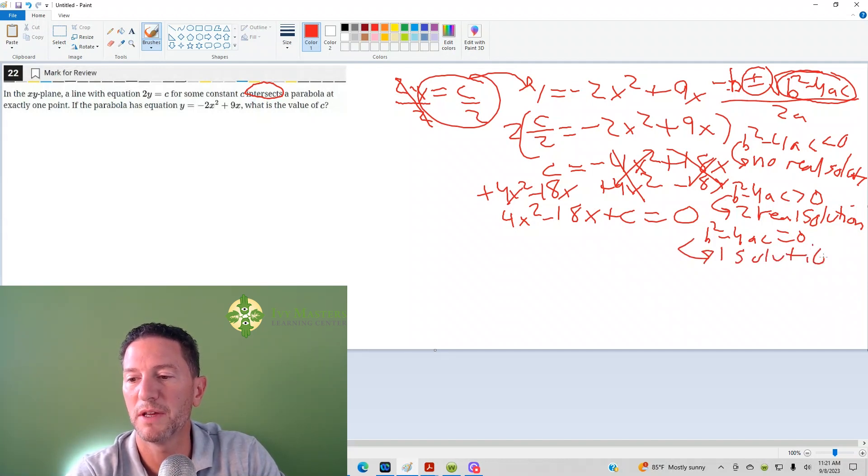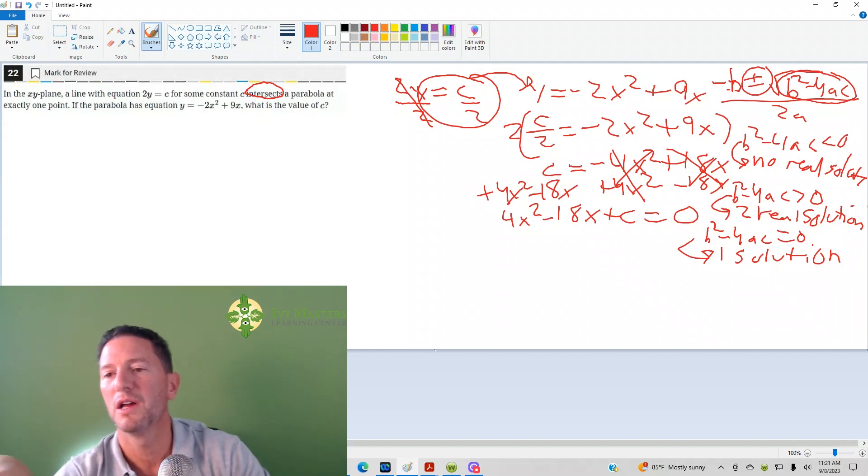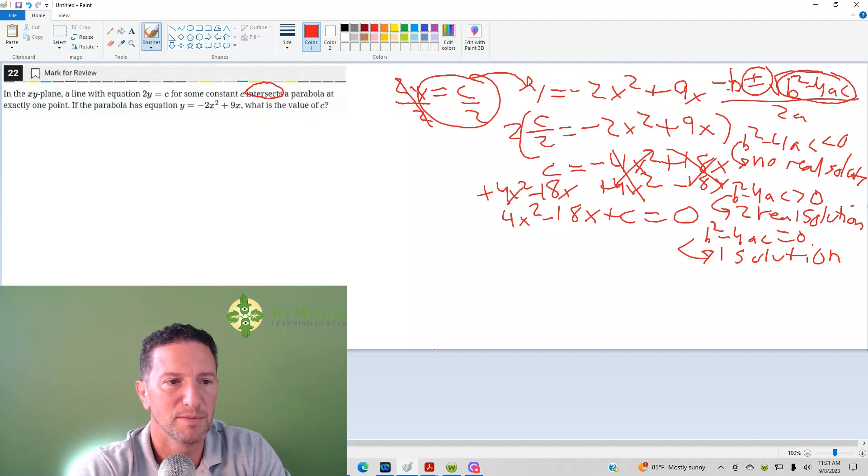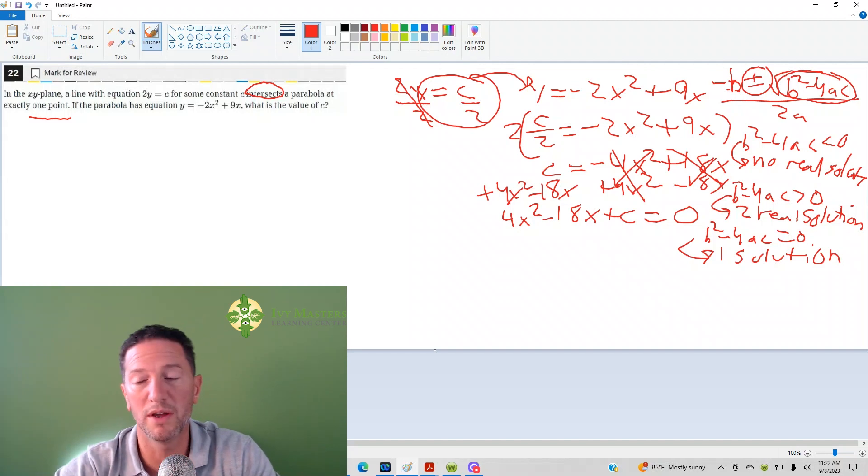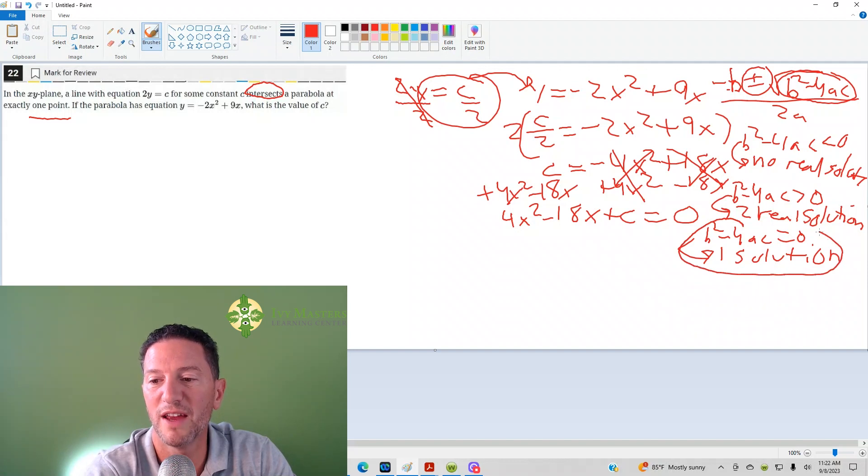Why is that? Because square root of 0 is 0, and if you add 0 to something and subtract 0 from something, you get the same value. So if it intersects a parabola at exactly one point, that's another way to say one solution. B squared minus 4AC has to equal 0.